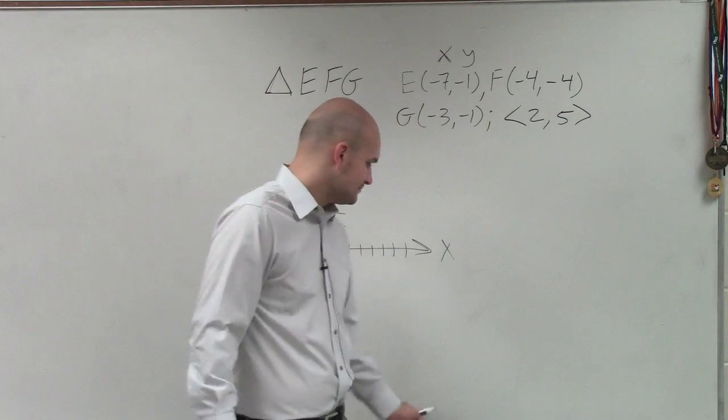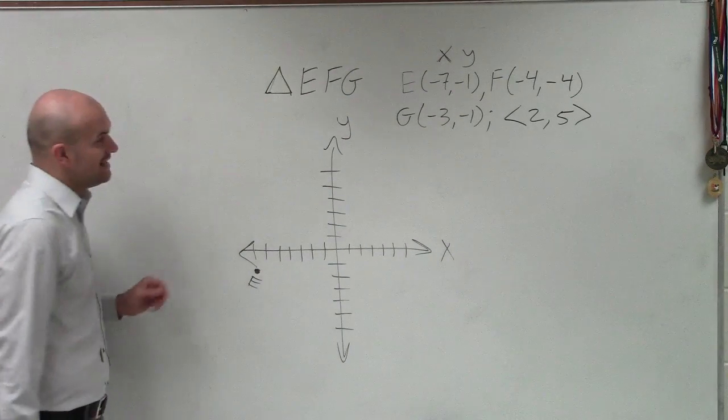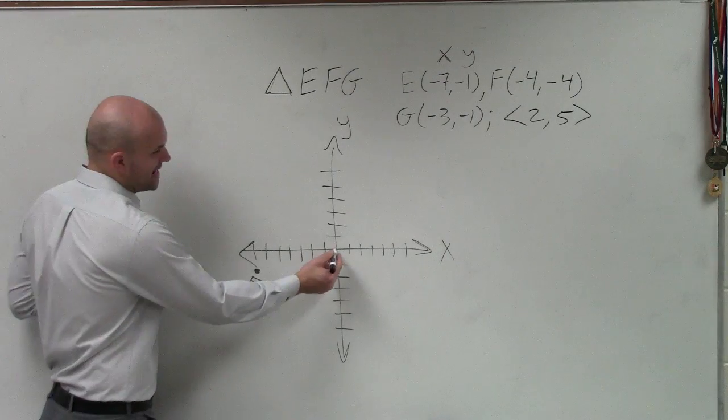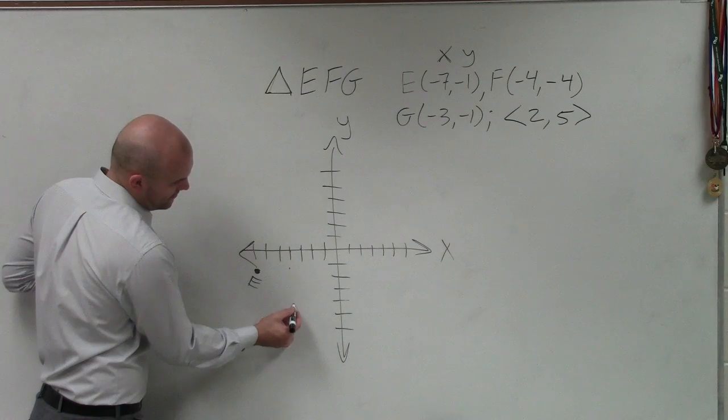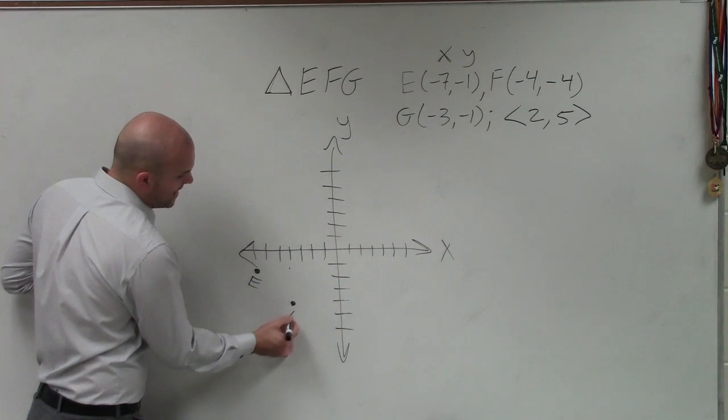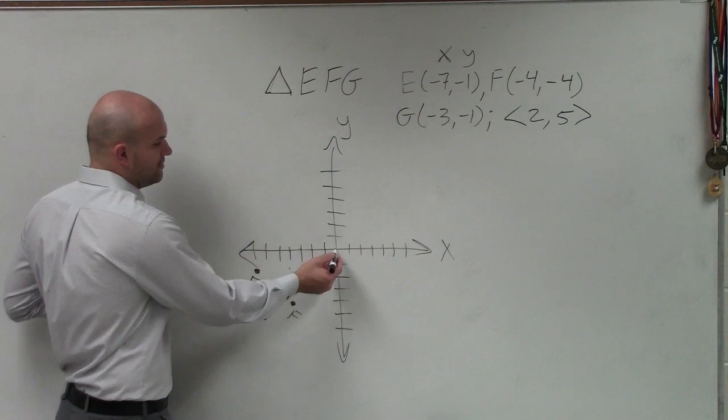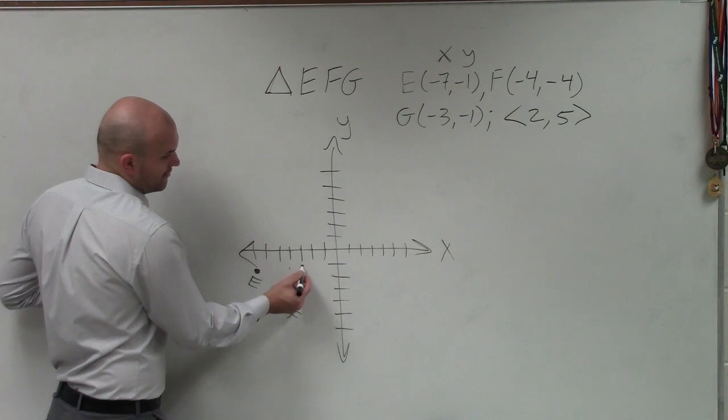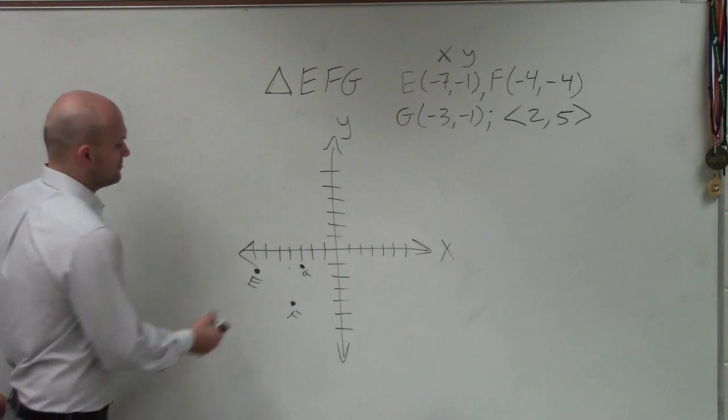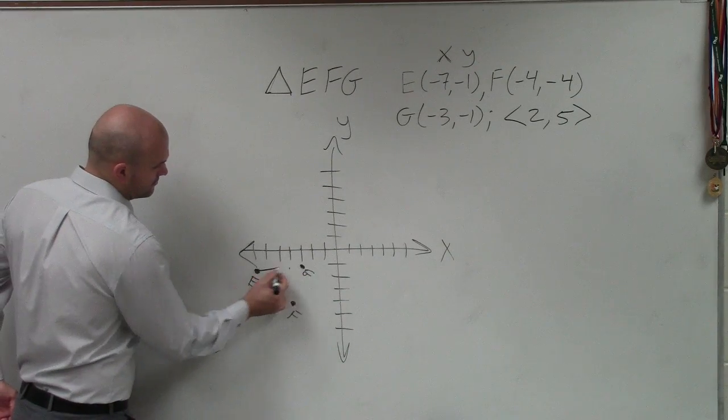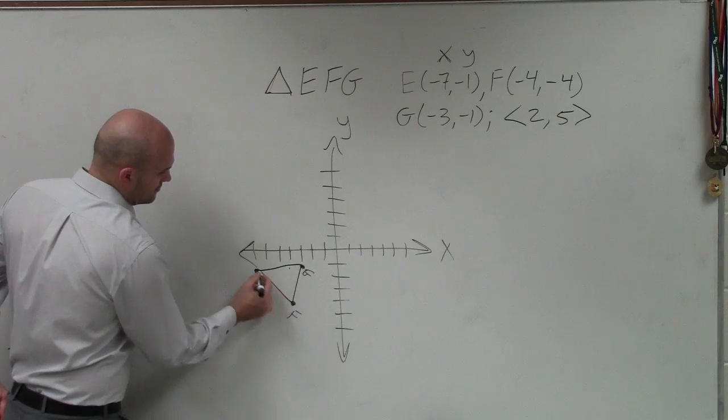All right, so now, here we have E. Now let's go to F. F says negative 4, 1, 2, 3, 4. Down 4, 1, 2, 3, 4. So that's F. G is negative 3, 1. 1, 2, 3, negative 1. And then we have R. That's it. So we have a triangle, OK?